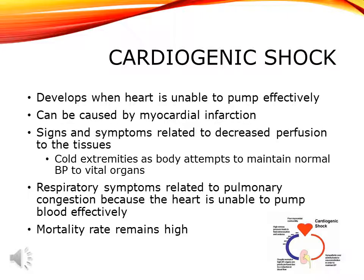The next type is cardiogenic shock, which develops when the heart is unable to pump effectively. The most common cause is myocardial infarction, where damage from lack of oxygen causes the heart to have problems pumping. Other causes include myocardial contusion — bruising from a chest trauma — cardiomyopathy, and ruptured ventricle. Because cardiogenic shock links directly back to the heart's inability to pump, the mortality rate remains pretty high.